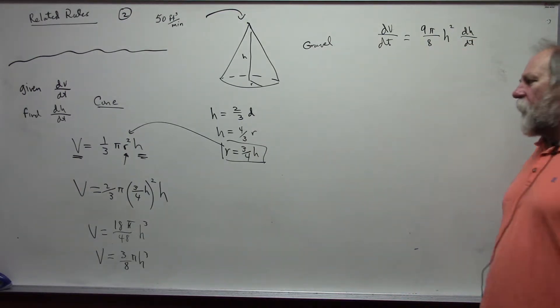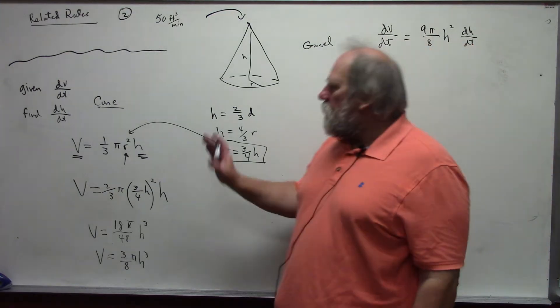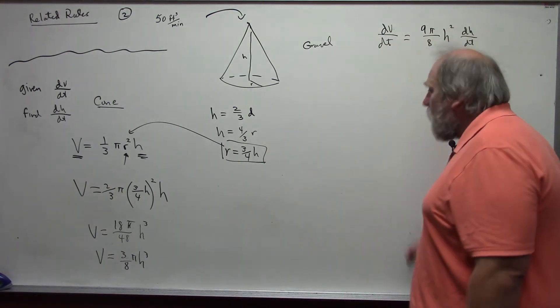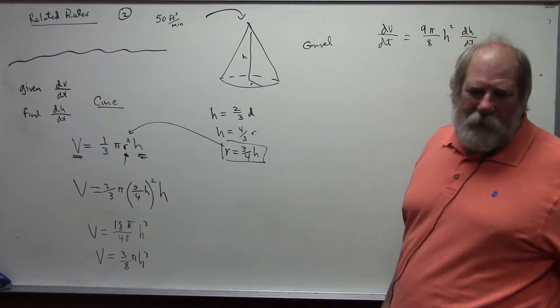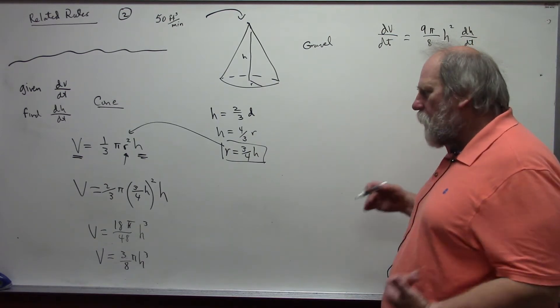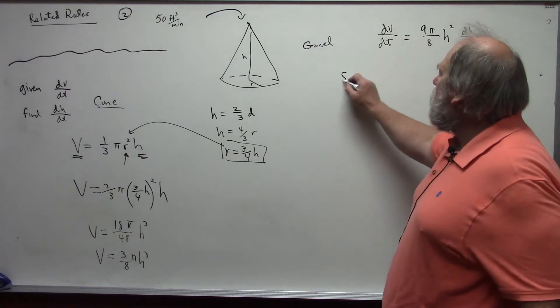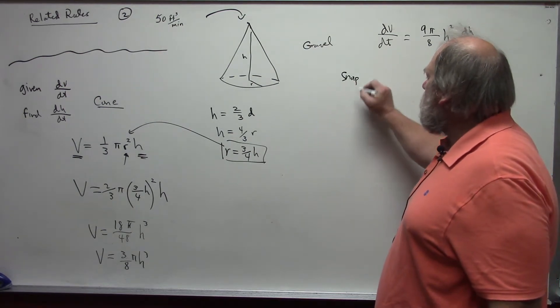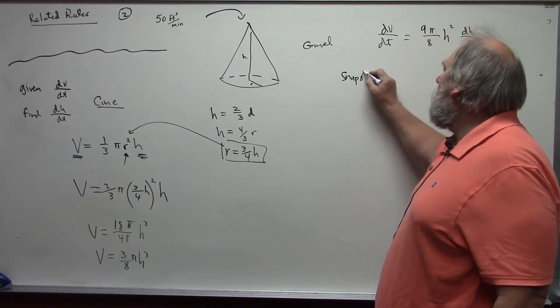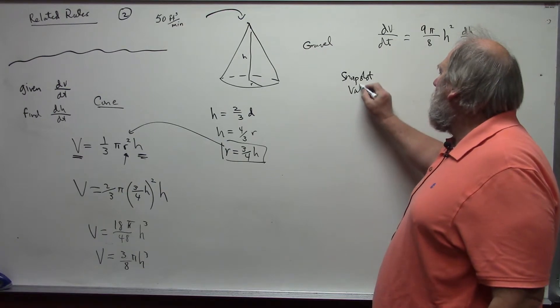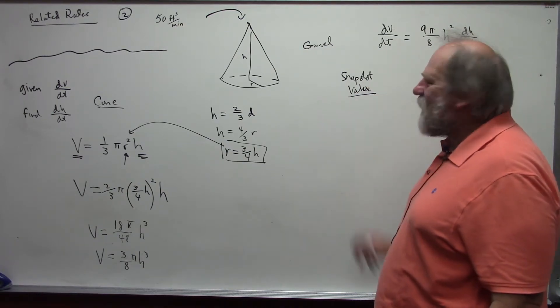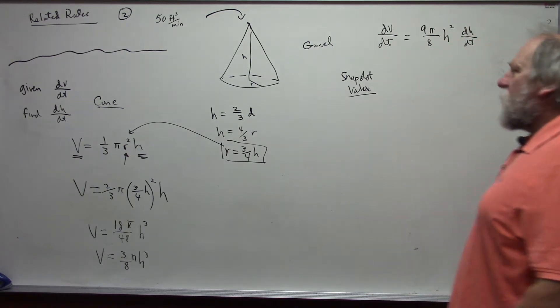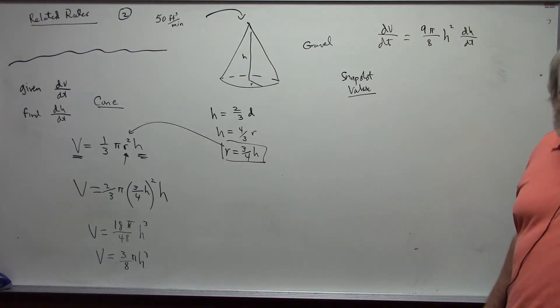Once we take the derivative, I can now use my snapshot value, the value that we want to determine exactly when the rate is changing. And I call this a snapshot value because it's like taking a photograph. Photograph tells you what's happening at that instant in time. That's when we want to know the rate of change at an instant in time.